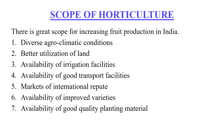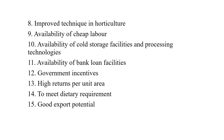Improved techniques in horticulture include HDP (High Density Plantation), mideo orcharding regeneration techniques, training and pruning, bahar treatment, bending in guava, ringing in mango, girdling in grapes, notching in fig, and the use of growth regulators — all available to growers for obtaining higher yield and better quality.